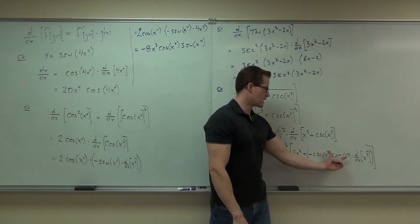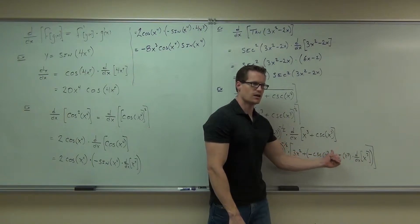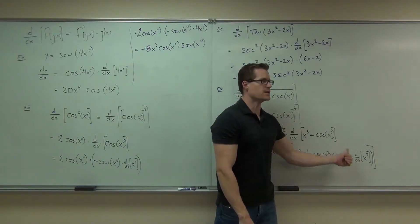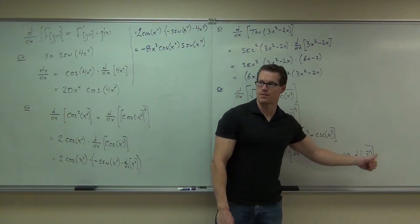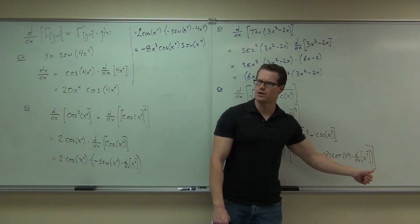This is negative cosecant cotangent. You do not change the inside. You multiply by the derivative of the inside. That's going to be 3x squared. That's where we're getting 3x squared. Are you with me on this so far?